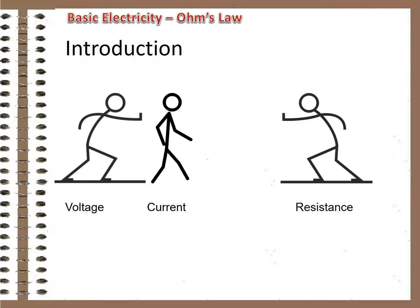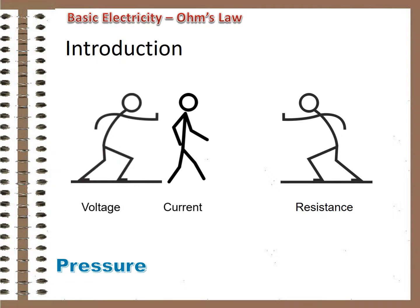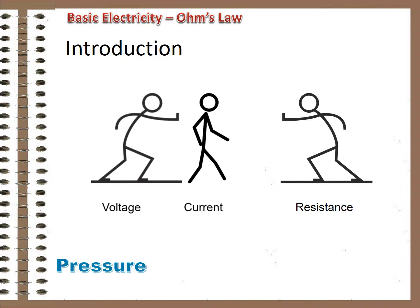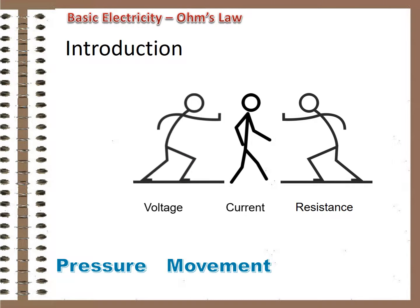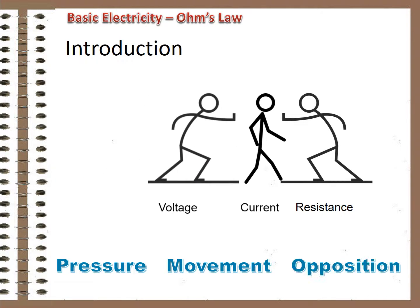In previous videos, I've talked a bit about voltage, current, and resistance — three important characteristics of electrical circuits. Voltage is the pressure that enables current to flow, current is the movement of electrical energy through a conductor, and resistance is the opposition to that current flow. It turns out all three are bound up in a constant, predictable relationship called Ohm's Law.